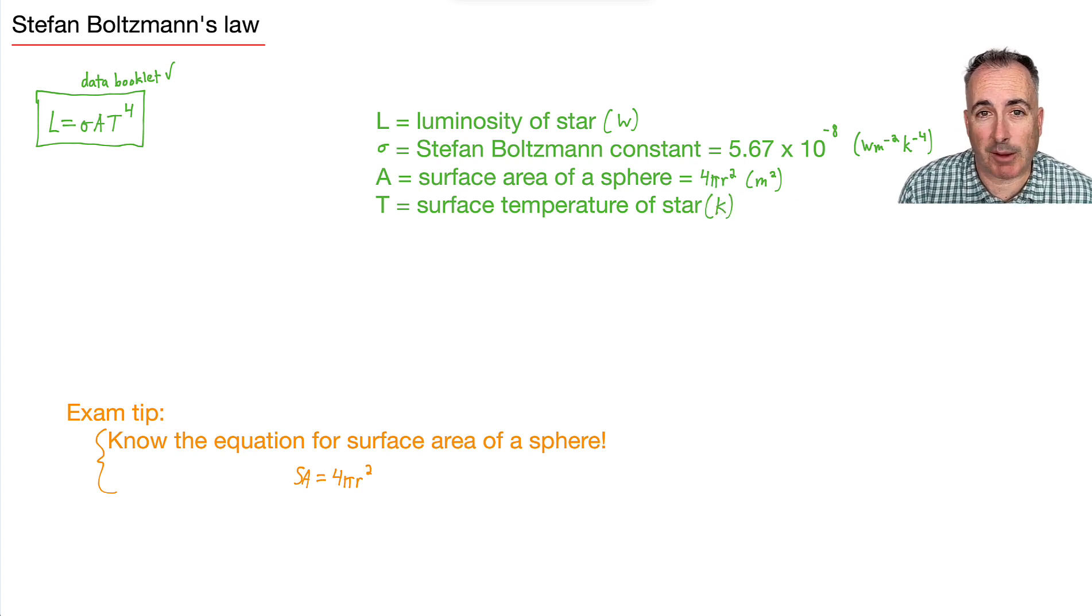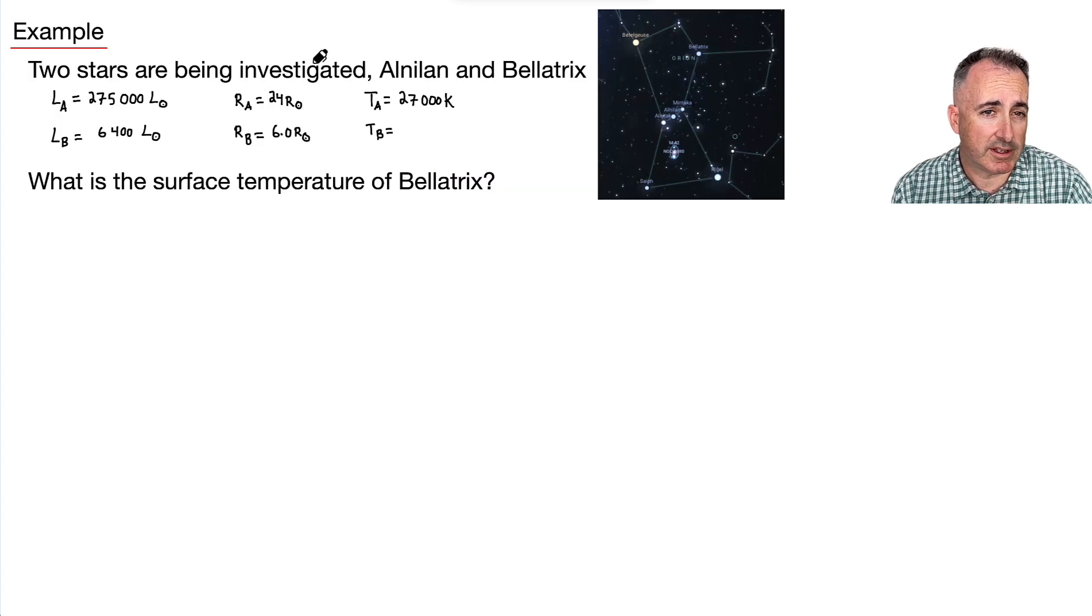So we have two stars that are being investigated, Alnilan and Bellatrix. And these are actually real stars that are in the constellation Orion, which you can see in the northern hemisphere at least. It's really easy to spot at least because it looks like these two stars here plus these three and these two. It kind of looks like a big, giant kind of R in the sky.